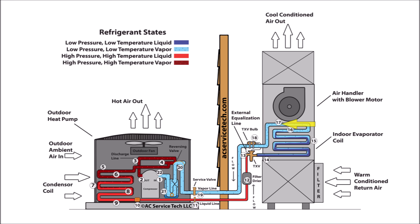In step seventeen, you have the low pressure, low temperature vapor refrigerant continuing to absorb heat and increasing in temperature — the refrigerant is in the process of superheating. In step eighteen, you have the low pressure, low temperature, superheated vapor exiting the evaporator coil. The amount of temperature increase between where the refrigerant comes out of the saturated state at step sixteen and where it exits the evaporator coil at step eighteen is called the superheat.